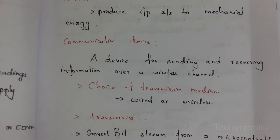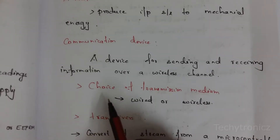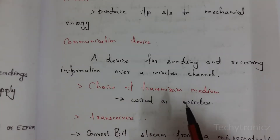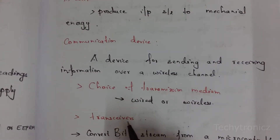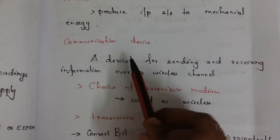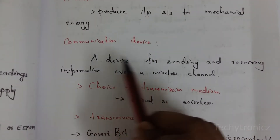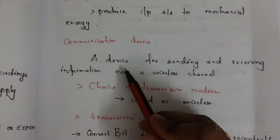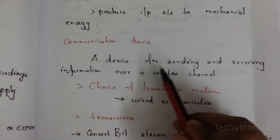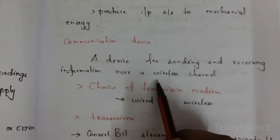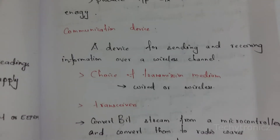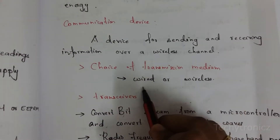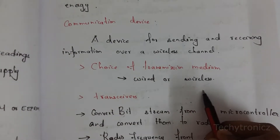The next component is communication devices. A communication device is used to send and receive information over a wireless channel. The choice of transmission medium may be wired or wireless.